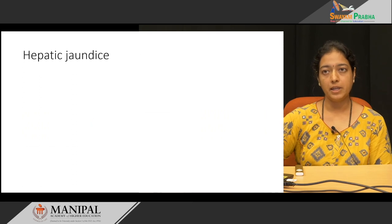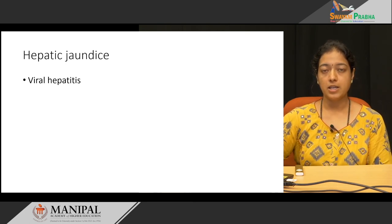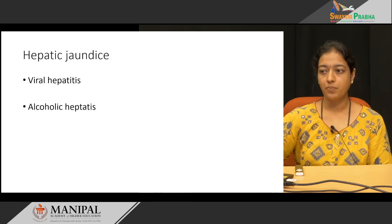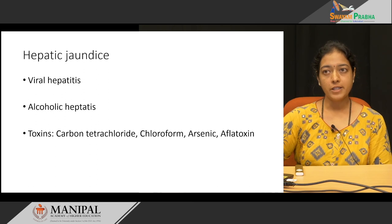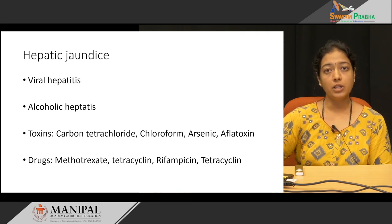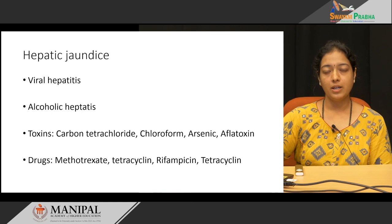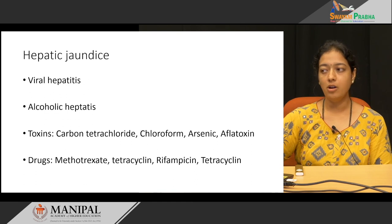Hepatic jaundice may be caused by viral hepatitis such as hepatitis A, B, or C, or alcoholic hepatitis. Toxins such as carbon tetrachloride, chloroform, arsenic, and aflatoxins can also cause hepatic jaundice. Some drugs such as methotrexate, tetracycline, and rifampicin can similarly be causative. So hepatic jaundice may be due to viral causes, alcohol, toxins, or drugs.